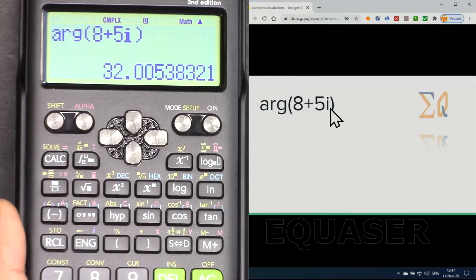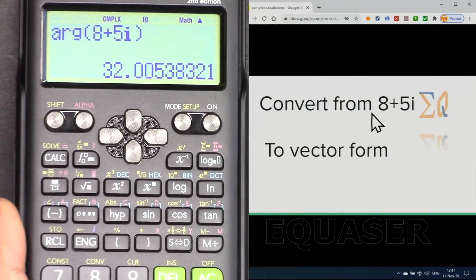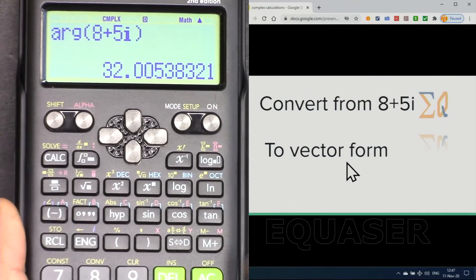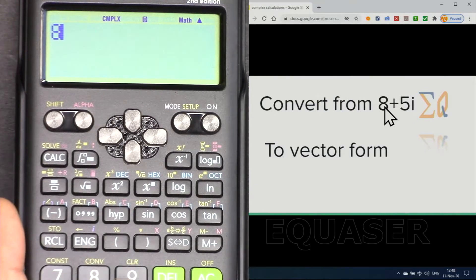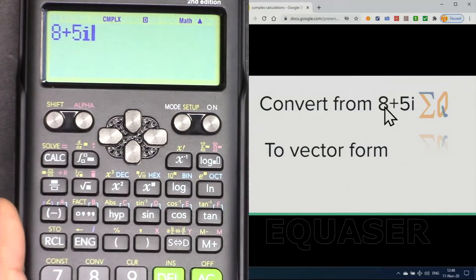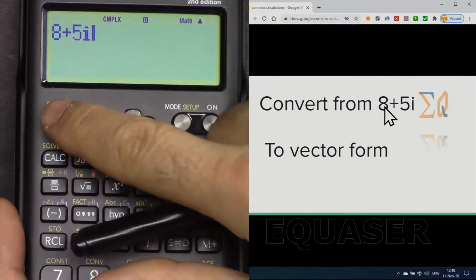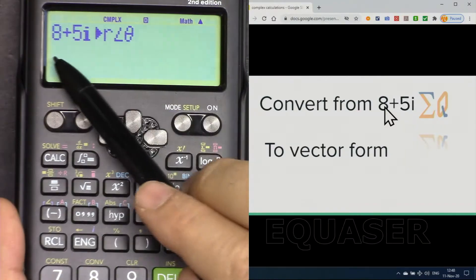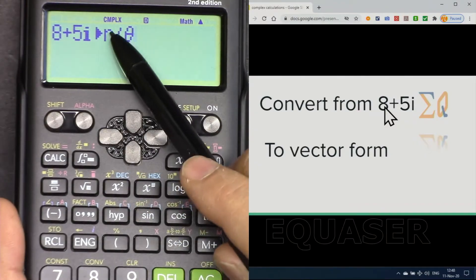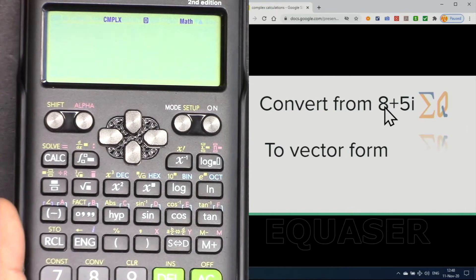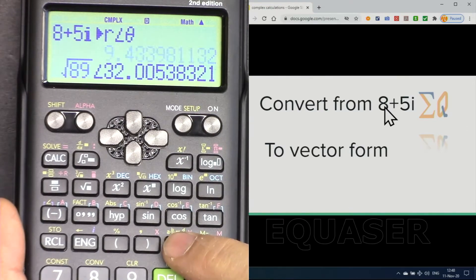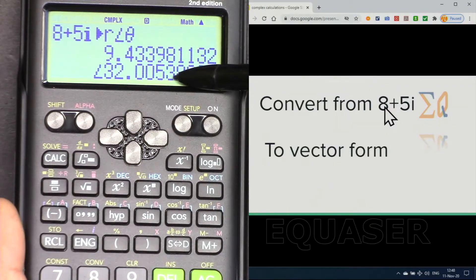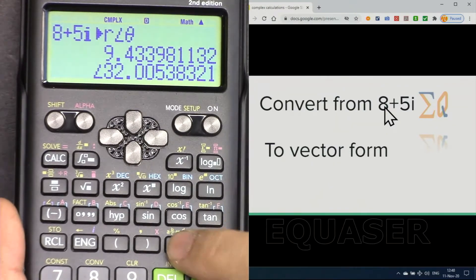It's very important: if it is in radian, you will get the radian value. Let's say you want to convert 8 plus 5i to vector form. First we enter 8 plus 5i, and then we press shift and then go to 2, which is complex, and here we select 3. This says convert this to r and theta. Press equal sign. If I press this button, it gives me the r and it gives me the angle in degree.